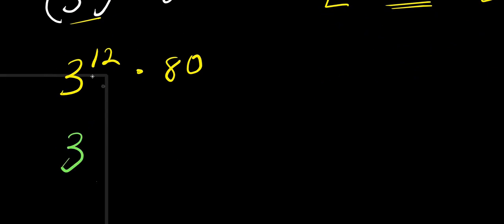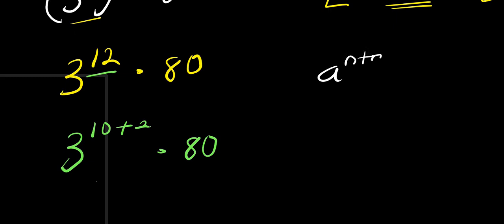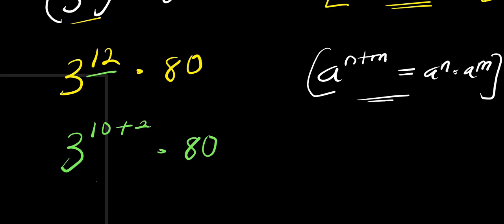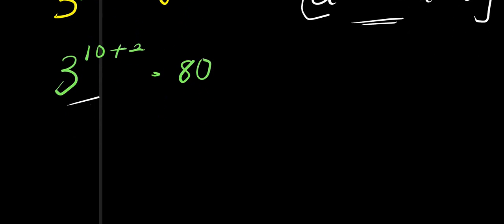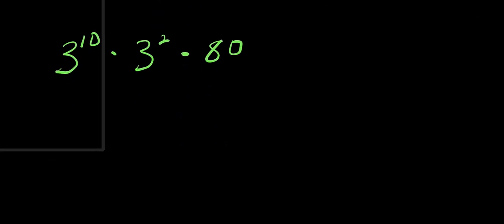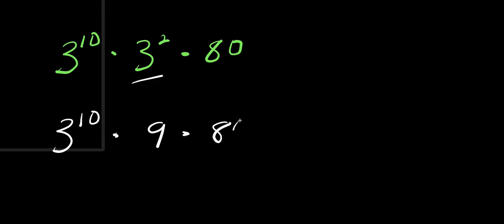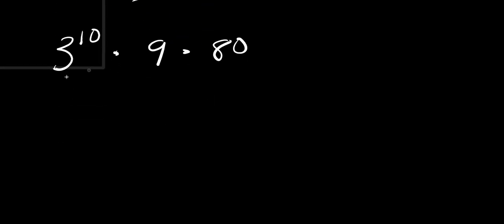From here, three to the power of twelve can be expressed using twelve as ten plus two. Now if you have a to the power of n plus m, this equals a to the power of n times a to the power of m. Applying this, we have three to the power of ten times three to the power of two times eighty. Three to the power of two is nine, so we have three to the power of ten times nine times eighty.